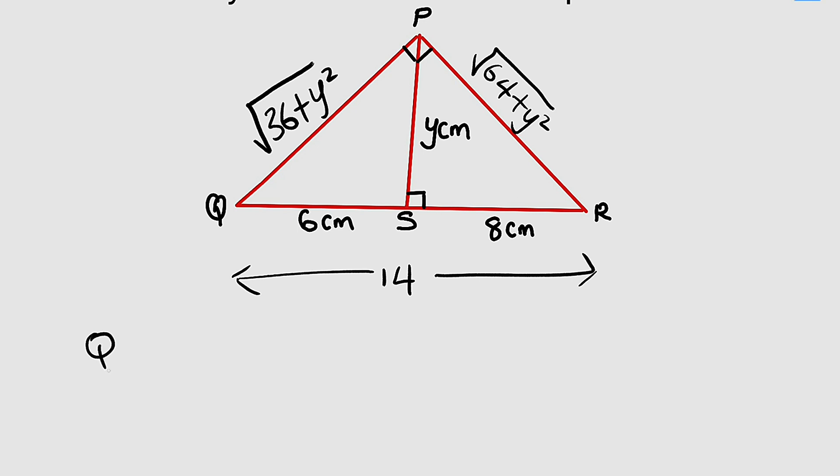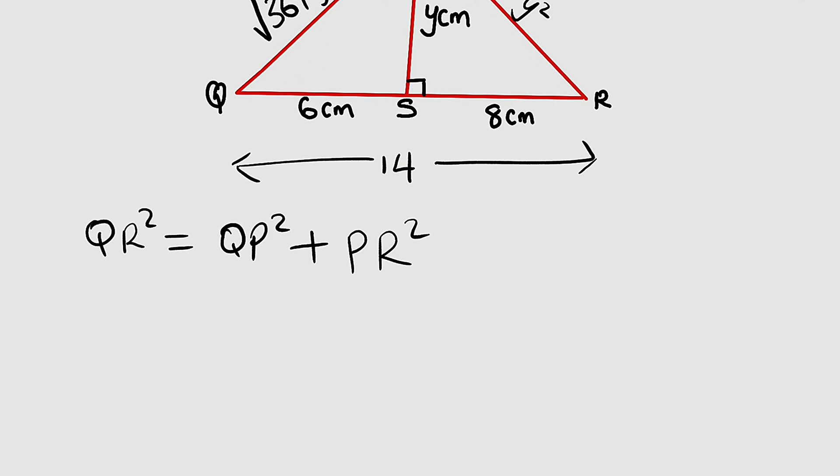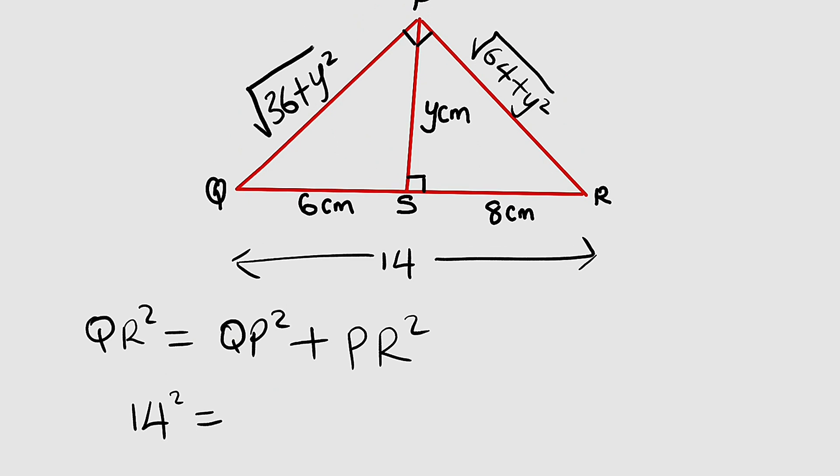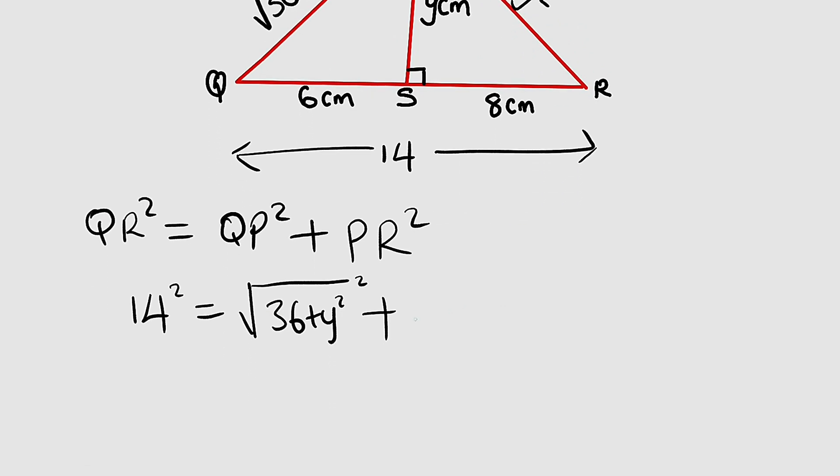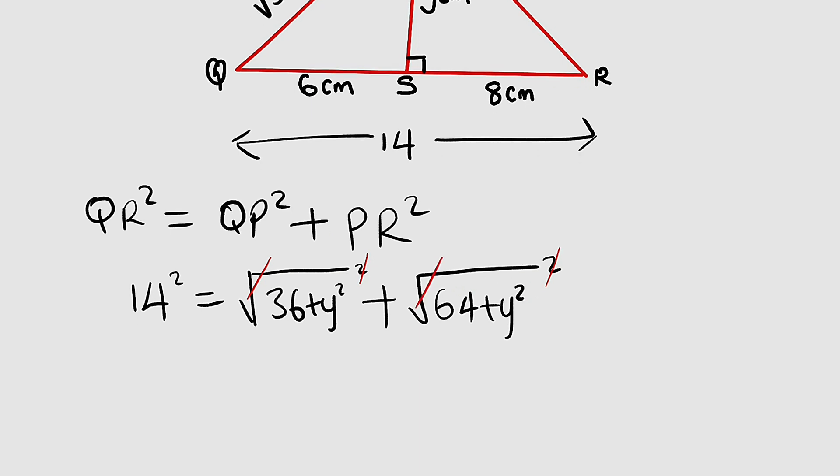So QR squared will be equal to QP squared plus PR squared. Let me substitute. QR is 14, so we have 14 squared equal to the square root of 36 plus y squared, also squared, plus the square root of 64 plus y squared, also squared.